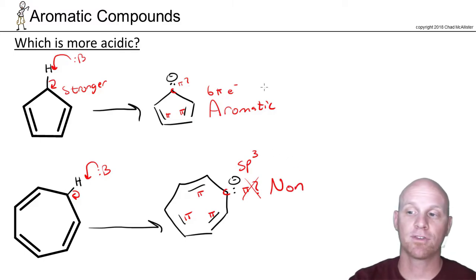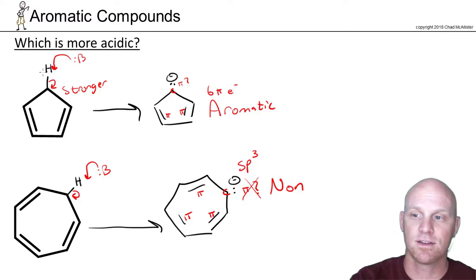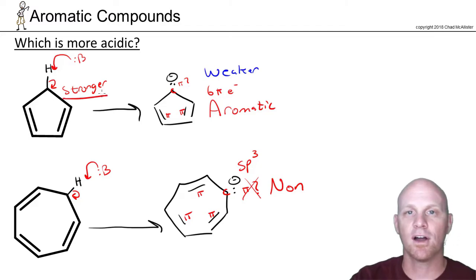In this case, this is the weaker conjugate base, and the weaker conjugate base comes from the stronger conjugate acid.